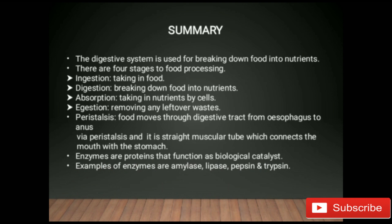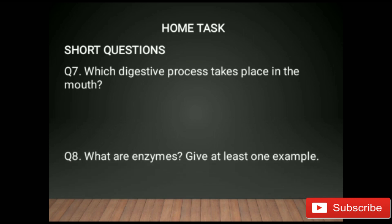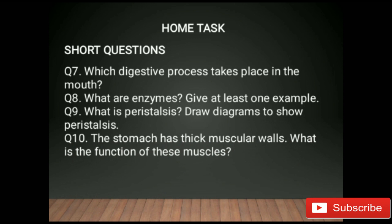For home task, answer the following short questions from your book: Question 7 — which digestive process takes place in the mouth? Question 8 — what are enzymes? Give at least one example. Question 9 — what is peristalsis? Draw a diagram to show peristalsis. Question 10 — the stomach has thick muscular walls; what is the function of these muscles? You can find answers on pages 9 to 11 of your book, or answer through my lecture.